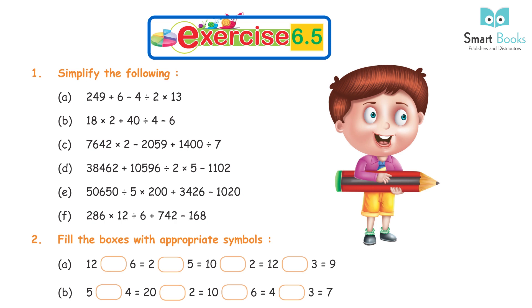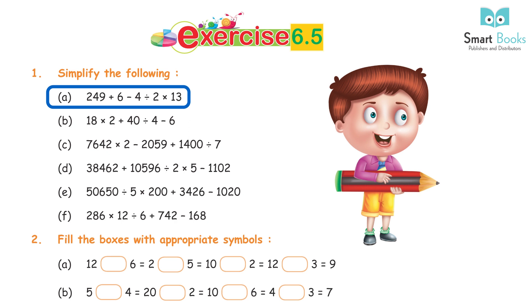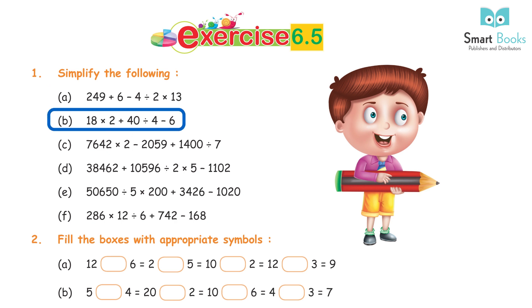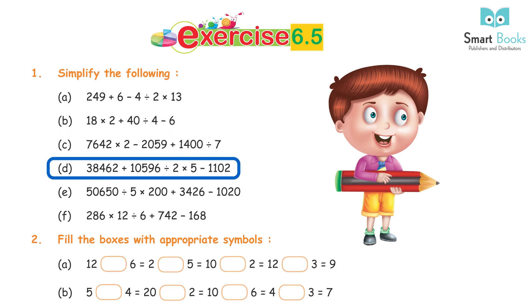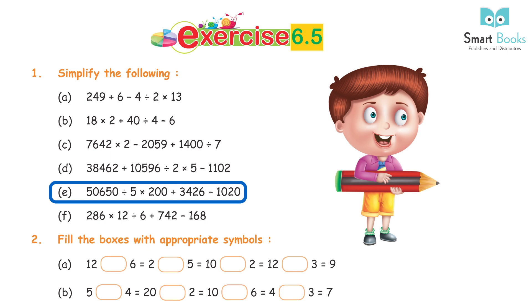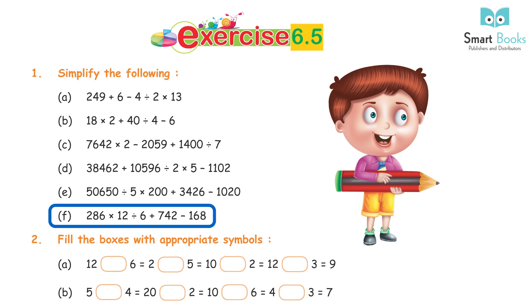Exercise 6.5, Question 1 — simplify the following: a) 249 + 6 − 4÷2×3 = 229; b) 18×2 + 40÷4 − 6 = 16; c) 7642×2 − 2059 + 1400÷7 = 13323; d) 38462 + 10596÷2×5 − 1102 = 63850; e) 50650÷5×200 + 3426 − 1020 = 58906; f) 286×12÷6 + 742 − 168 = 1146.